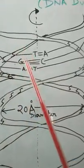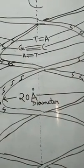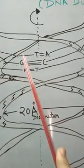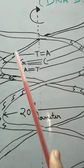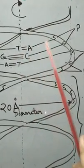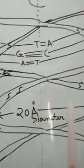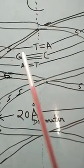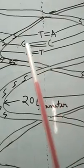At carbon number one of the ribose pentose sugar, we attach the nitrogenous base. The nitrogenous bases are adenine, thymine, guanine, and cytosine. For the first sugar at carbon number one, thymine is attached, which has a double bond with adenine on the other polynucleotide chain. You need to remember the number of hydrogen bonds: thymine and adenine have double bonds, and guanine and cytosine have triple bonds.